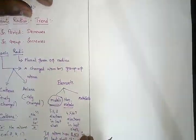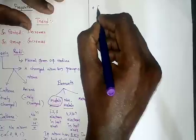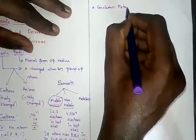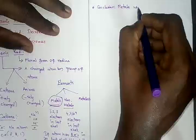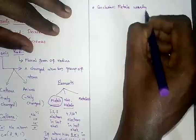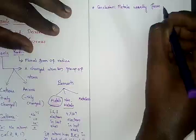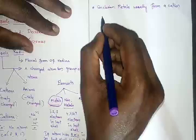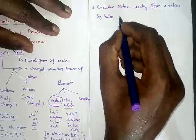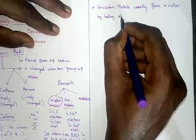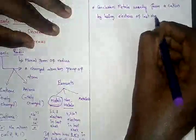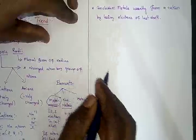The conclusion is: metals usually form cations by losing electrons from the last shell.